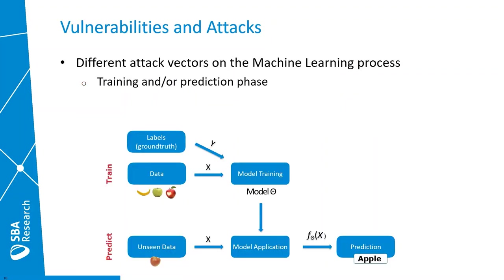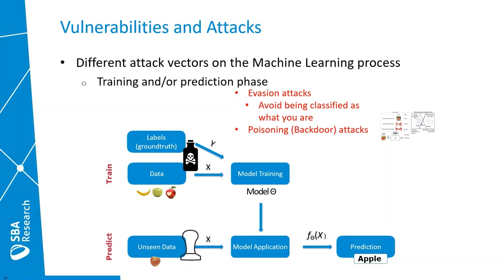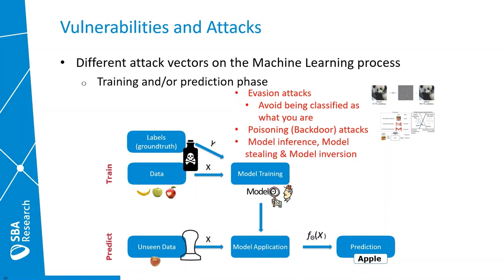Let's revisit our machine learning pipeline to see when attacks could happen. We can broadly distinguish between attacks in the training or in the prediction phase. In the prediction phase this could be for example evasion attacks, where an adversary tries to avoid having a sample classified as what it really is. In the training phase we could have a poisoning attack, which would allow us to embed a backdoor in the trained machine learning model. And finally there are attacks that directly target the model itself, doing inference to recreate training data or to steal or copy an existing machine learning model.